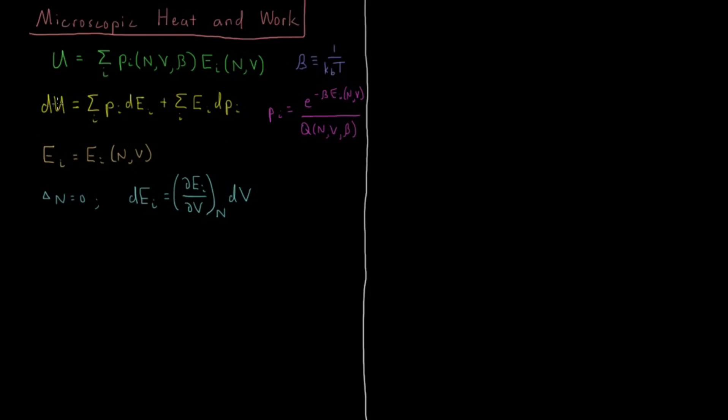So let's substitute this into our energy expression up there. dU equals sum over I, going to have probability of I partial with respect to volume of the energies, times change in volume, plus sum over I, and we have that term the same as it was before, Ei dpi.